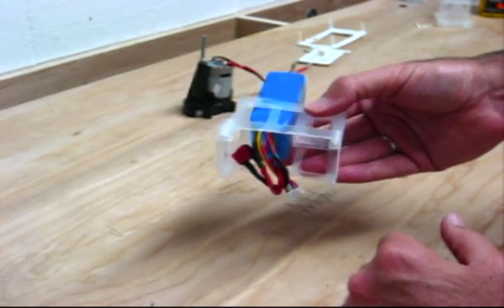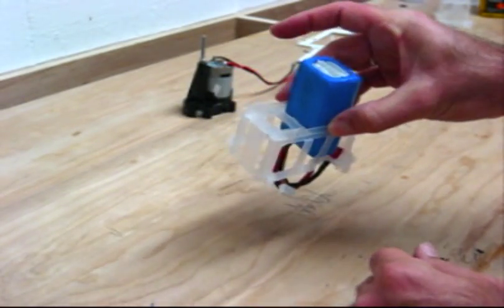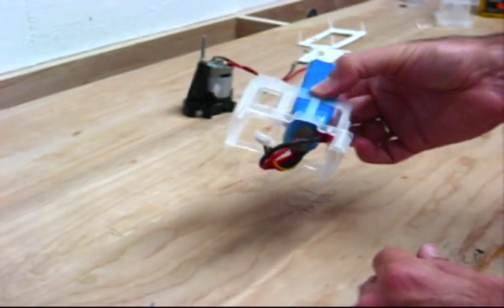So next we'll mount this into the plane, and we'll see how we're going to mount the electronic speed control and plug it all in.